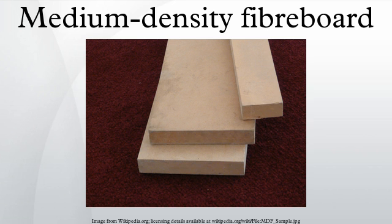A typical disc chipper contains 4–16 blades. Any resulting chips that are too large may be rechipped; undersized chips may be used as fuel. The chips are then washed and checked for defects, then compacted using a screw feeder, heated for 30 to 120 seconds to soften the wood, and fed into a defibrator. The defibrator maintains high pressure and temperature while grinding the wood chips into a pulp.